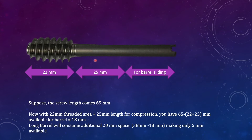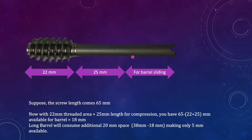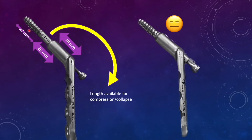So when we slide the long barrel over this part, the 20 millimeter additional space will be used up, leaving only 5 millimeter for compression or collapse. We don't want this to happen. Therefore, whenever the space for sliding inside the barrel is limited, we use the short barrel. The length of the short barrel is 25 millimeter, compared to the 38 millimeter size of the long barrel plate.